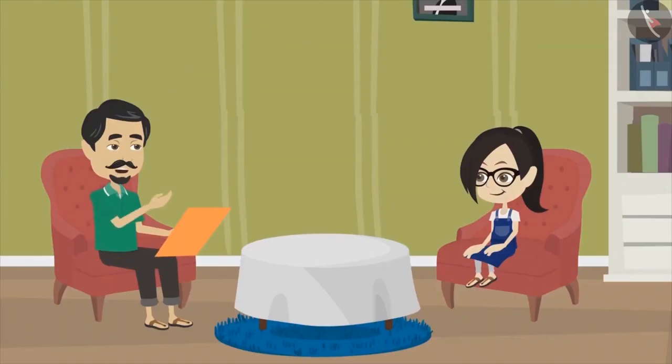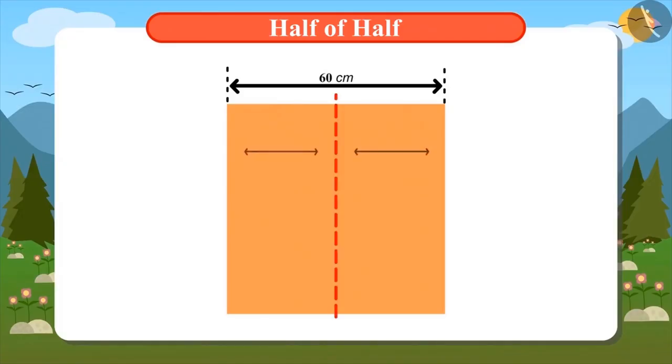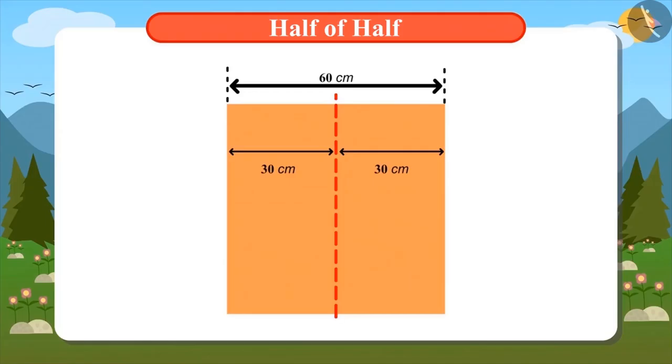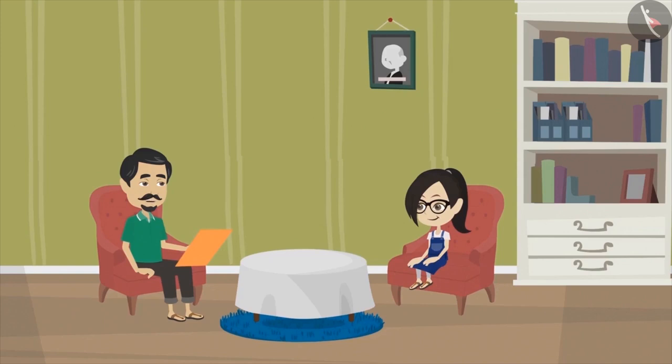Do you know what is half? Yes, when a thing is divided into two equal parts, then we say that it is divided into two halves. That means, we can say that when a thing is divided into two equal parts, then one part will be half of that thing. Yes. In the same way, if we divide a thing into four equal parts, then one part is called one-fourth of that thing.